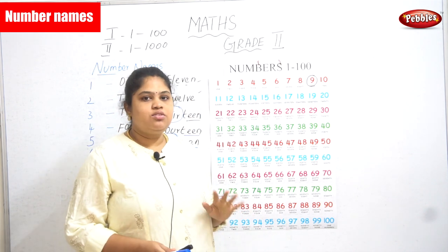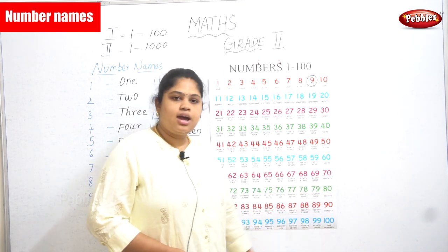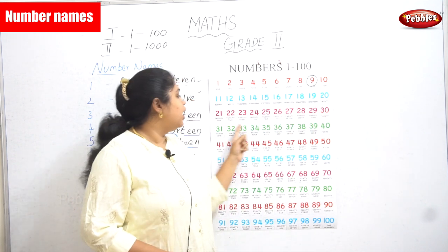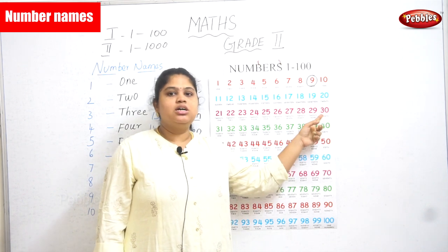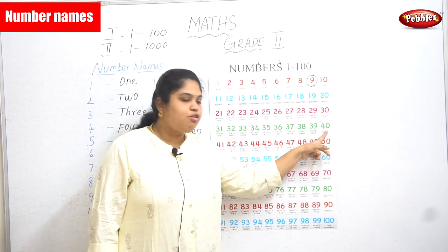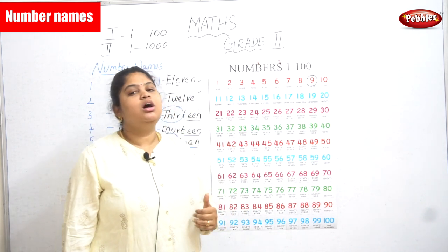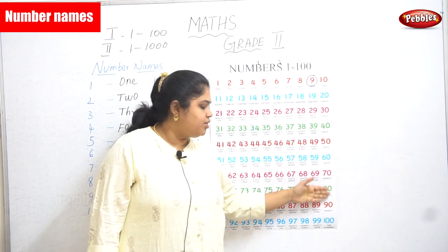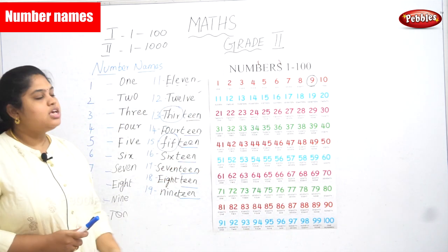Next, we are going to concentrate on 20, 30, 40, 50, 60, 70, 80, 90, and 100. Because if you know the spelling for 20 and 30, you can easily write 21, 22, 31, 32, and so on. If you know the spelling for 40, the same applies vice versa. So you have to be clear with the multiples of ten: 20, 30, 40, 50, 60, 70, 80, 90, 100. Next, we are going to read the spellings for these two-digit numbers.